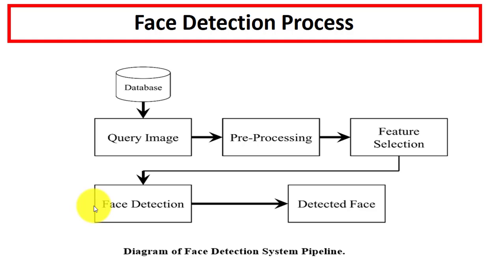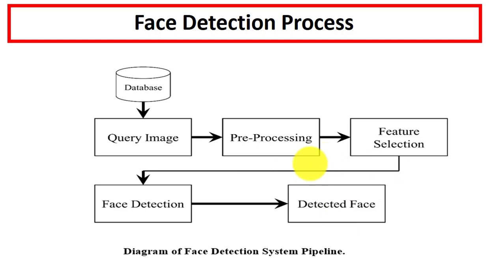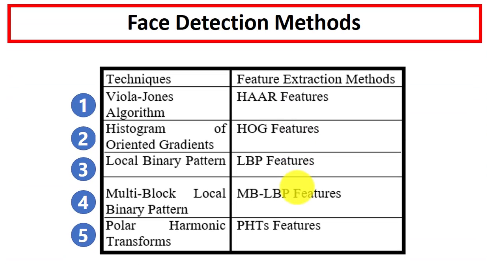First is the face detection process. This is the simple pipeline for the face detection system. First we have a database, and in the database we have a set of images. From the database we can select any query image. On this image we will perform pre-processing, after which we perform feature selection. On the selected features we will apply a face detector, and you can see the detected face. This is the simple pipeline used by any model or software.